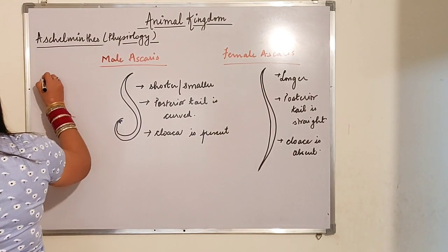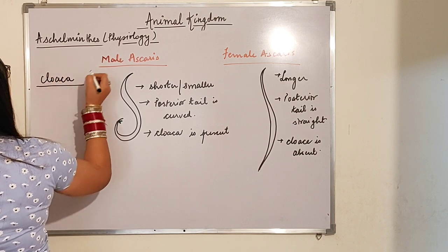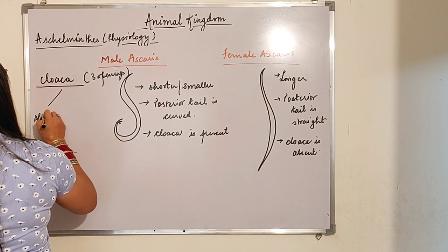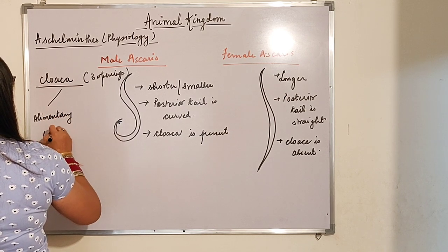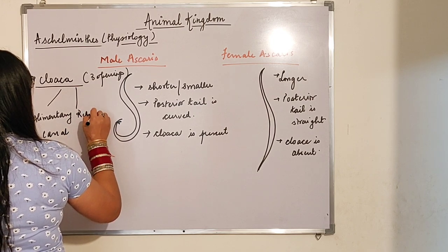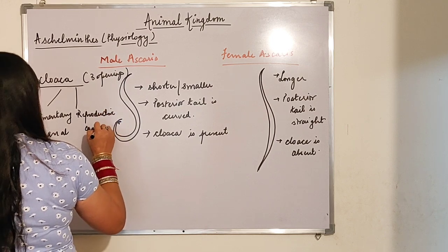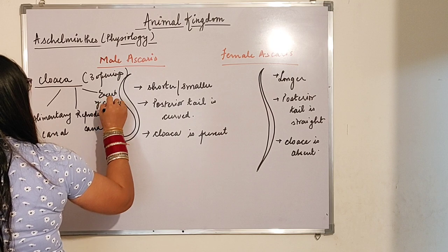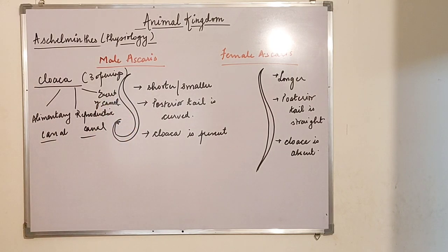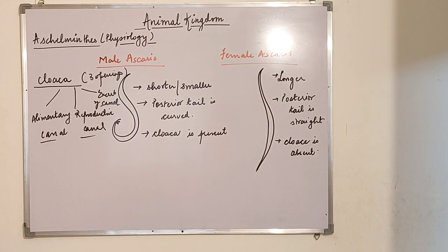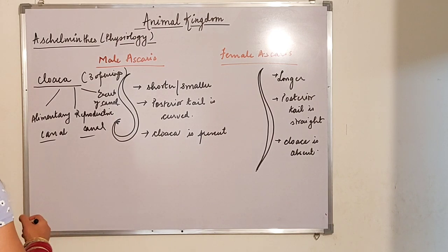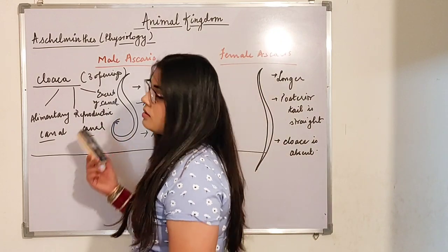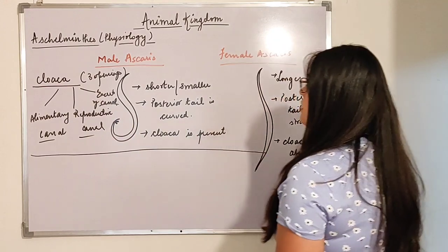The last point is cloaca — cloaca is present in males and absent in females. What is the cloaca? It is a chamber with three openings: first is of the alimentary canal, second is of the reproductive canal, and third is of the excretory canal. So the three canals have their openings in the chamber known as the cloaca.